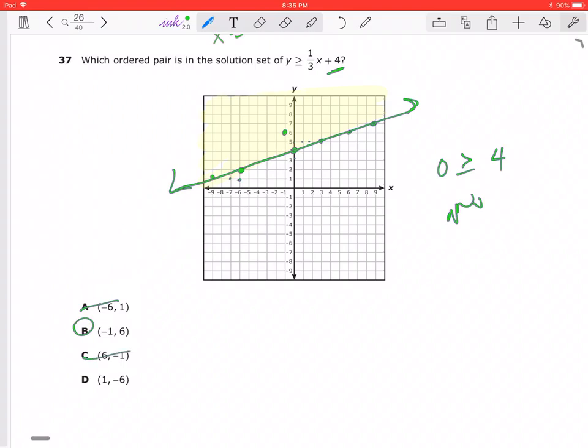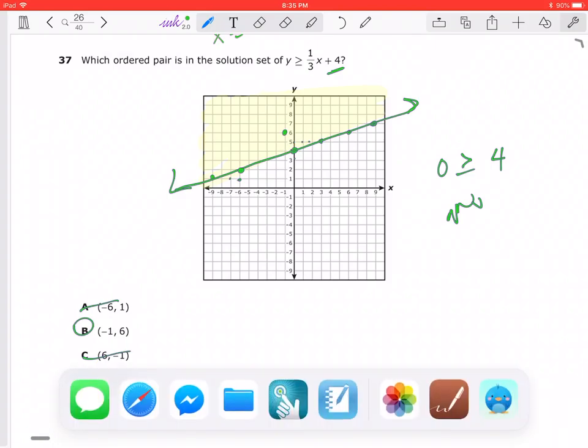We got (6, 1) - nope. And then we have (1, -6) - definitely nope. So our answer is choice B for number 37. I'm gonna pause the video so I don't have hiccups for the next three videos. I'll see you in the next one.